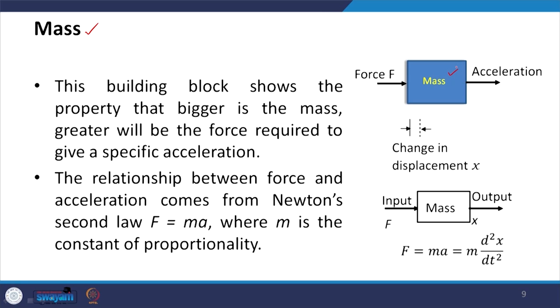Next, the mass building block: bigger is the mass, greater will be the force required to give a specific acceleration. The relationship is F = ma from Newton's law, so for a given acceleration, if mass increases you need a greater force. The input is F and output is x, and the relationship is F = m·(d²x/dt²).